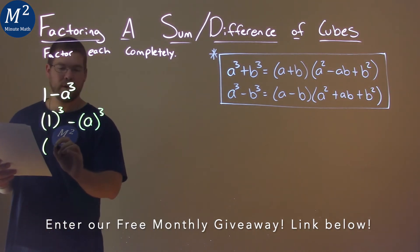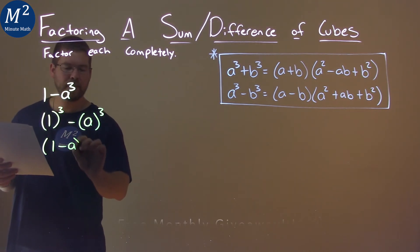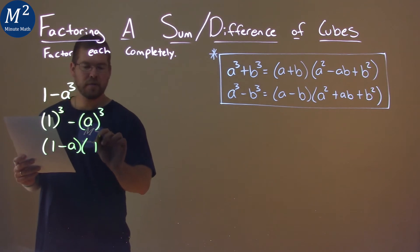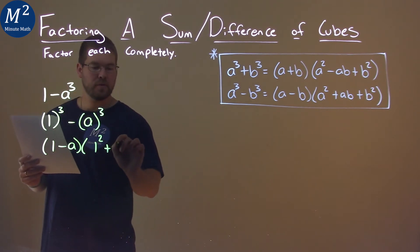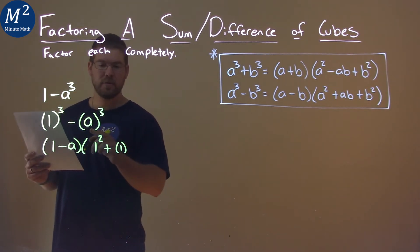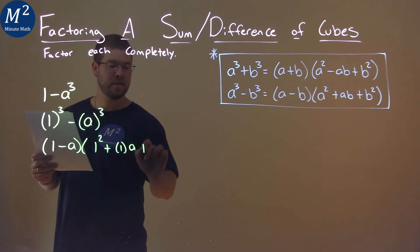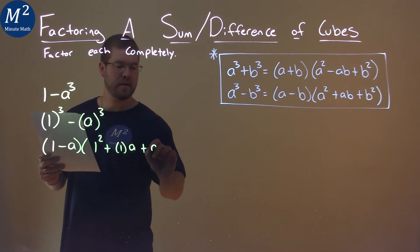Our formula says we have a minus b, so one minus the a, times our one squared, plus one times our b value, which is a here, plus then a squared.